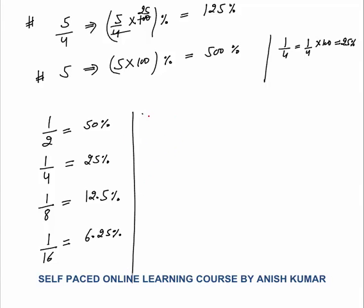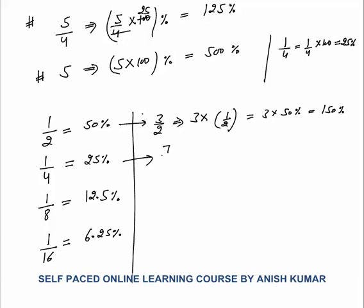These fractions are useful for calculating related fractions. For example, knowing 1 by 2 equals 50 percent, what is 3 by 2? It is 3 times of half, so 3 into 50 equals 150 percent. Similarly, once you know 1 by 4, you can calculate 7 by 4.